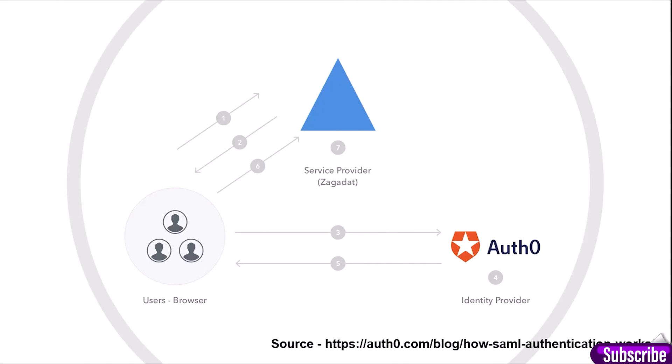We can see in this diagram how a request flows from the user's browser to the service provider and how the identity provider works. First, the user's browser sends a request to the service provider, and then the service provider returns the request response. After that, the user's browser sends to the identity provider. The source for this diagram is auth0.com/blog/how-saml-authentication-works.